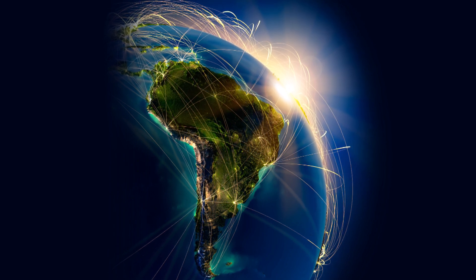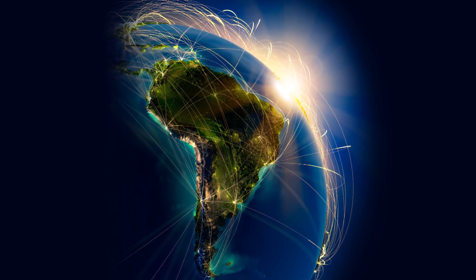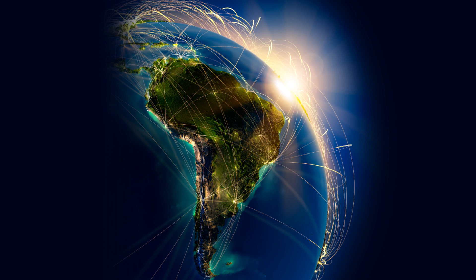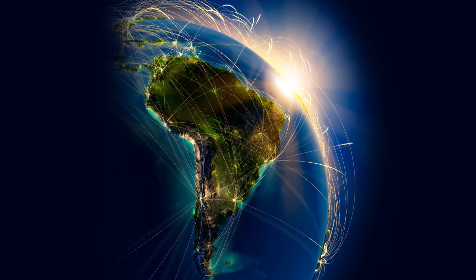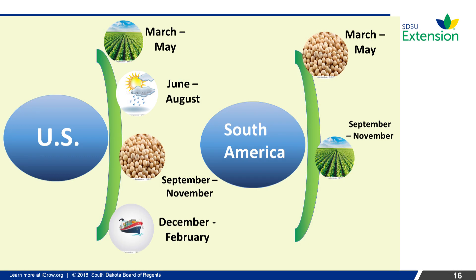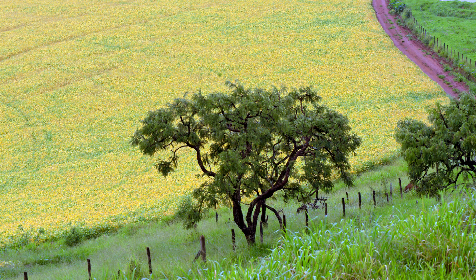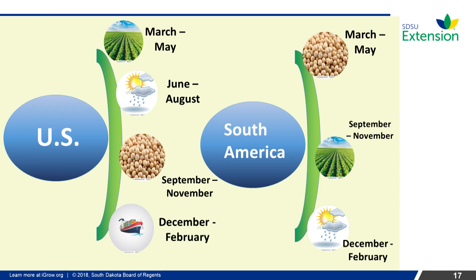South American weather, whose growing season is during the winter months in the U.S., can influence U.S. export demand. During September through November, the U.S. market monitors the acres planted in South America and the weather conditions. The focus on South American weather conditions is particularly important during December through February, when yields will be most affected.